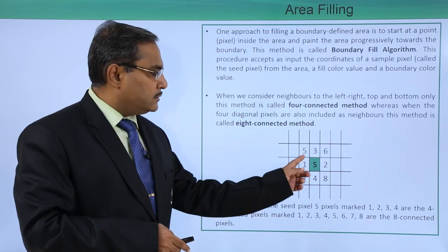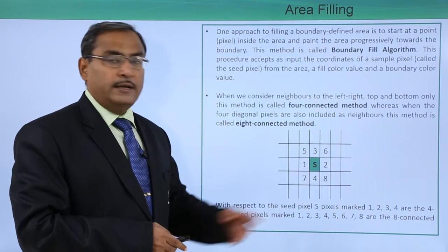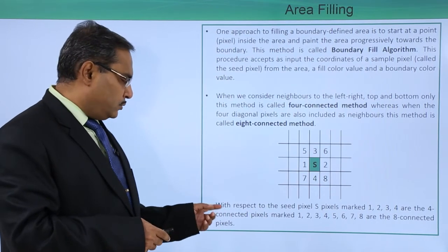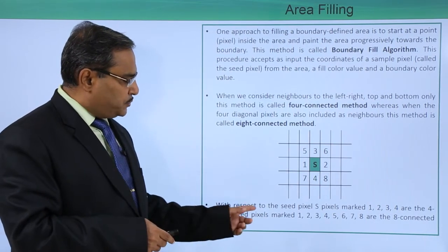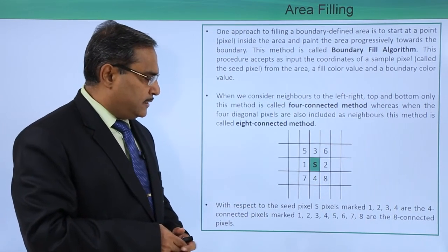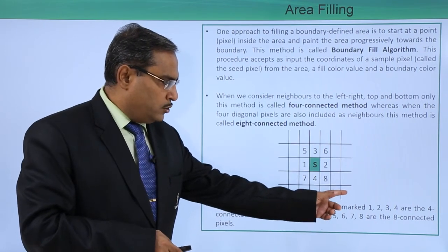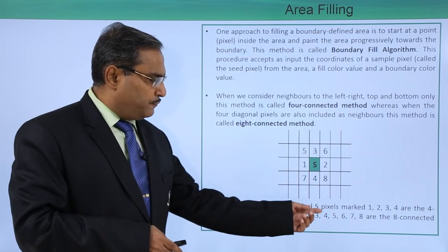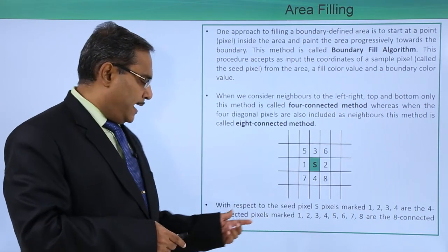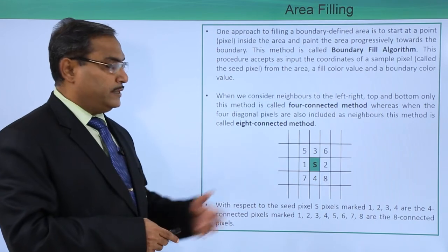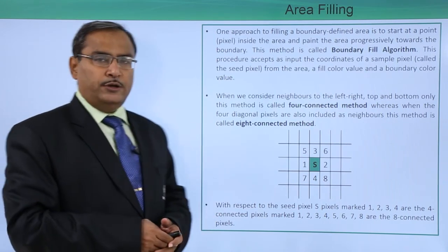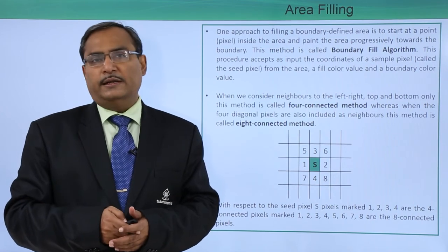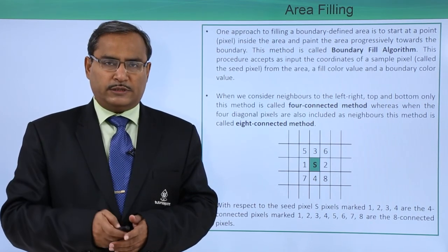Whenever we consider pixels 5, 6, 7, and 8, it will be considered as the 8-connected method. With respect to the seed pixel S, pixels marked 1, 2, 3, 4 are the 4-connected pixels, and pixels marked 1, 2, 3, 4, 5, 6, 7, 8 are the 8-connected pixels, as discussed earlier. In this video, we have discussed what area filling is and the different categories. Thanks for watching.